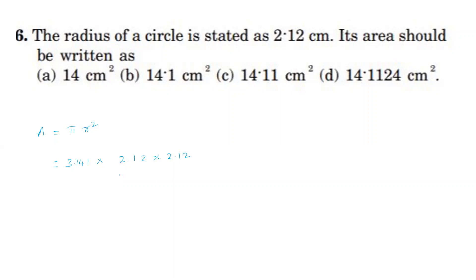When multiplying numbers, the resultant significant figures should match the least number of significant figures among the quantities being multiplied. Here, 2.12 has three significant figures, so the answer should also be expressed in three significant figures. Among the options — two significant figures, three significant figures, four significant figures, and six significant figures — three significant figures appears only in the second option. So for the sixth question, the second option is correct.